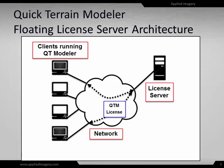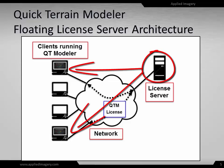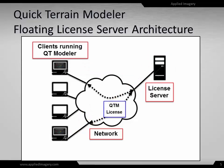Quick Terrain Modeler's other version of floating license uses a license server. Applied Imagery uses FlexNet for the license server architecture. No dongles are required in this architecture. The license server maintains a pool of licenses, and as each user launches Quick Terrain Modeler, a license is removed from the available pool. License servers can be set up in less than 10 minutes and can actually run on a client machine if necessary. Network connectivity is required for this architecture to function.